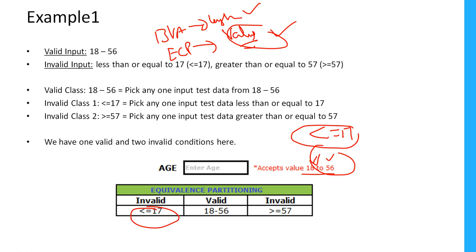Suppose the maximum is 56. If I say more than 56 or greater than or equal to 57 age, these are all invalid data. That also comes under invalid. But what is the valid here? Only 18 to 56 is valid data for this particular field.